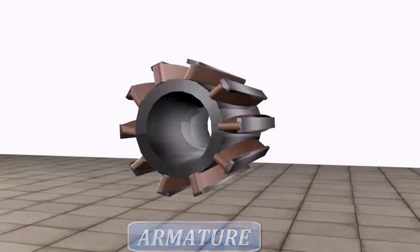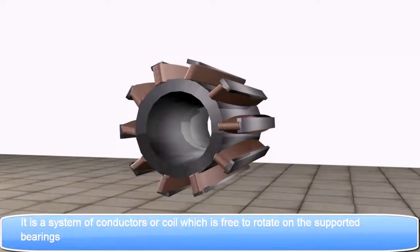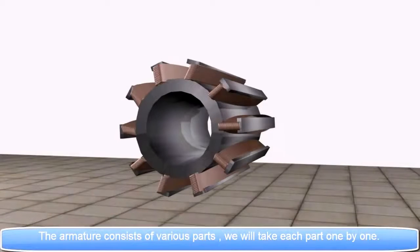Armature: It is a system of conductors or coil which is free to rotate on the supported bearings. The armature consists of various parts. We will take each part one by one.